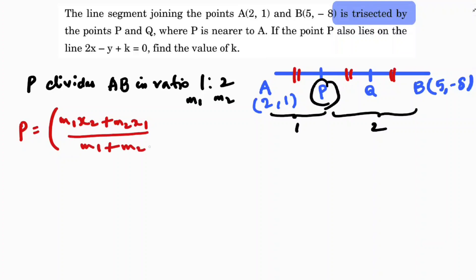Here x1, y1 are coordinates of A, and x2, y2 are coordinates of B. If I substitute the values: m1 is 1, x2 is 5, m2 is 2, and x1 is 2, so 2 into 2 equals 4.